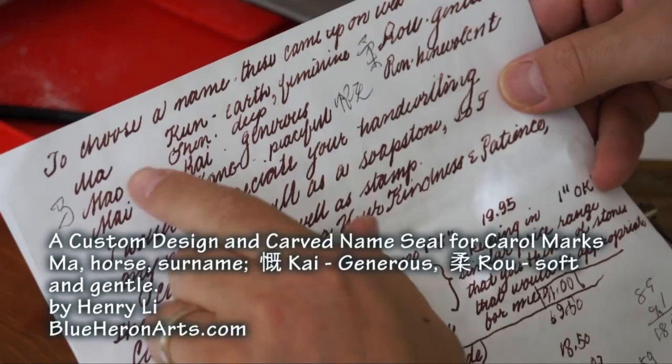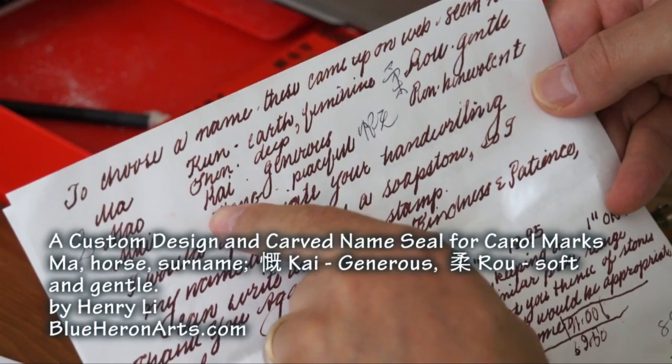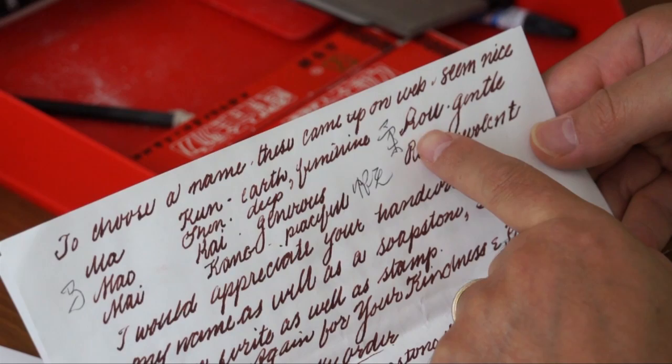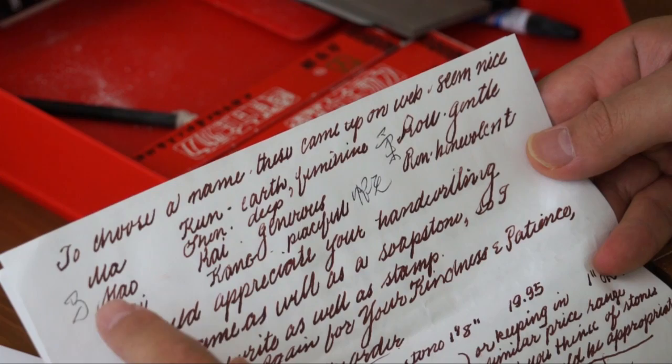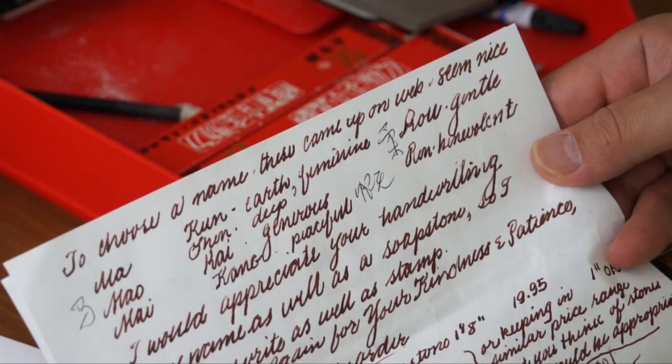So we had some different choices for the phonetic translation. Because the Chinese character has meaning. So we picked Kai for Carol, the first syllable, meaning generous. And the second, Ro, the second part of the first name, we use Ro in Chinese, means gentle or soft. The last name comes first. It's Ma, which means horse, is a common Chinese surname. So Ma Kai Ro is the new name for Carol Marks.